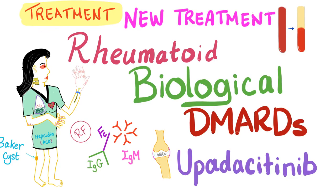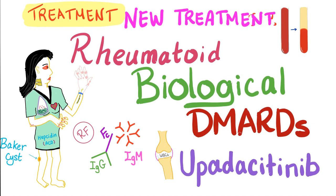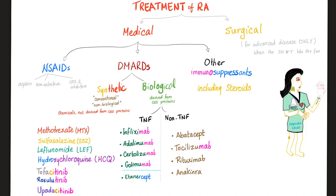It's Medicosis Perfectionals and we are still talking about the treatment of rheumatoid arthritis. We have a brand new medication today: upadacitinib.